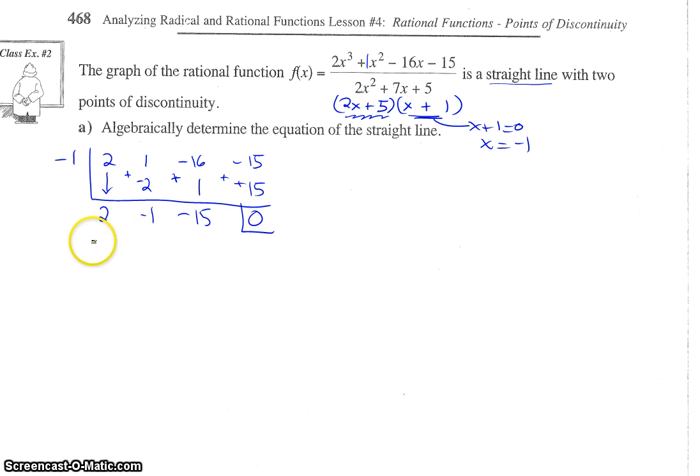All right, so now we're left with 2x squared minus x minus 15. And we also have our factor from here, which was x plus 1. Okay, so we're going to factor this quadratic again. Now, we already know that one of the factors is going to be 2x plus 5. So we might as well go ahead and write that.